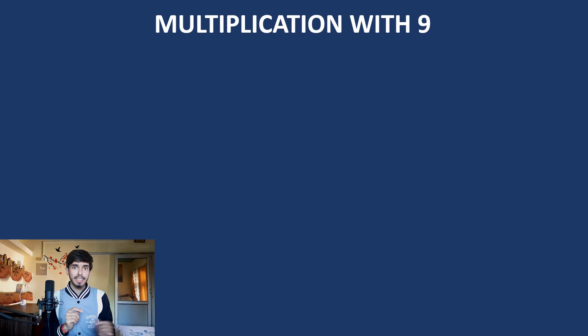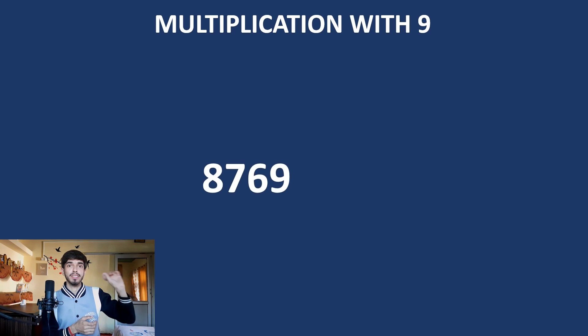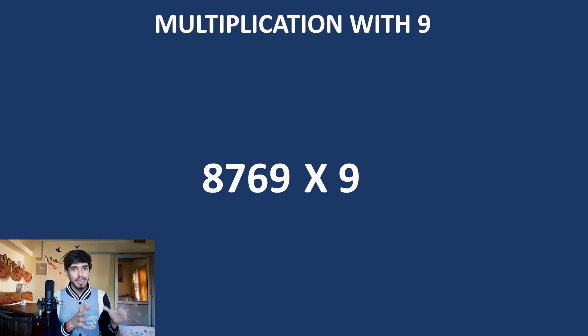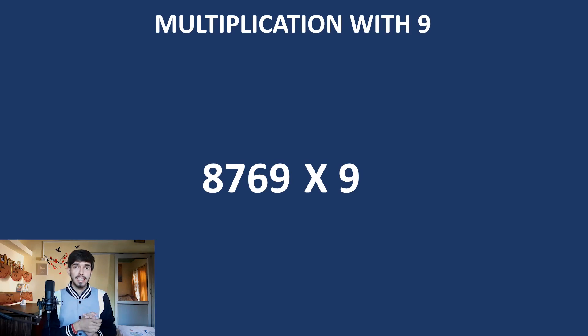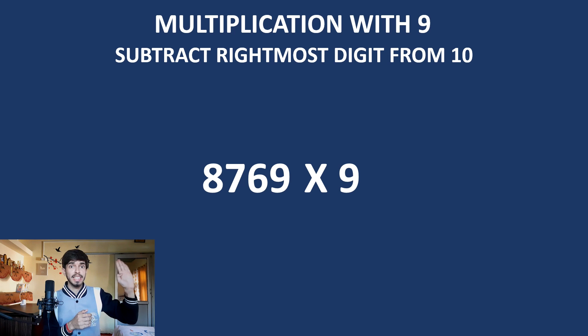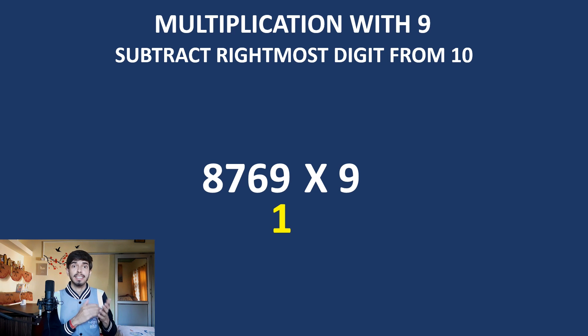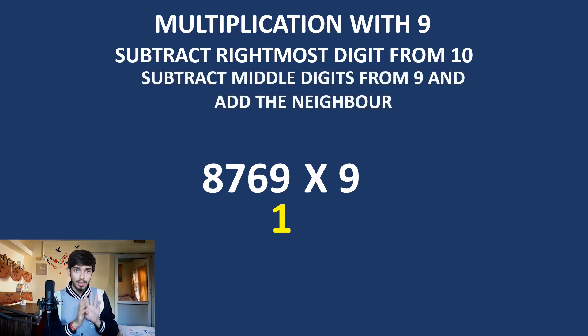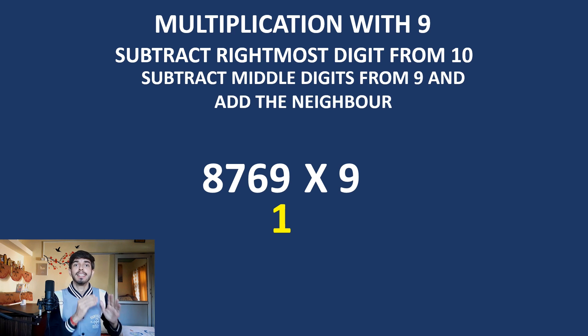Let us first learn the multiplication with 9. Let us multiply a number with 9 using the Trachtenberg speed system of basic mathematics. First try it with the traditional method and see how much complexity there is and how much time it takes. The key: subtract the rightmost digit from 10.